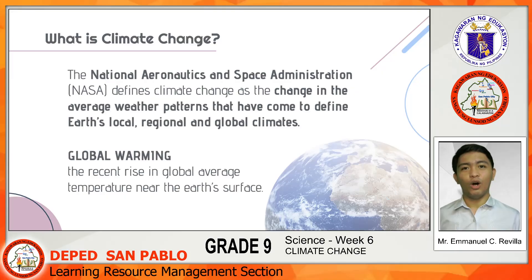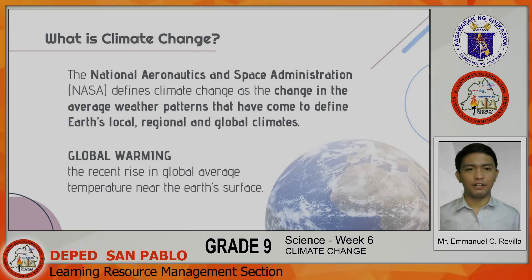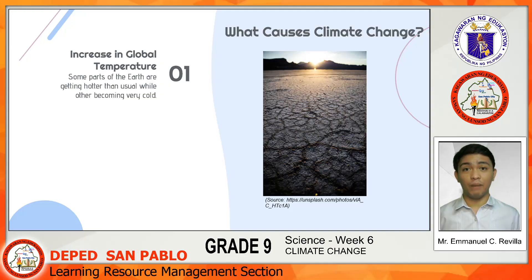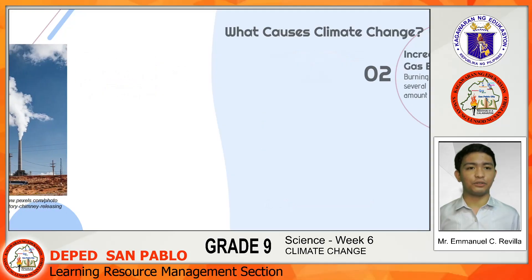What caused this climate change? There are a lot of different factors that contributed to this. First, increase in global temperature or global warming — this is actually the main cause of climate change. Due to this, the temperature of the Earth is increasing day by day, resulting in some parts of the Earth getting hotter than usual while others become very cold.